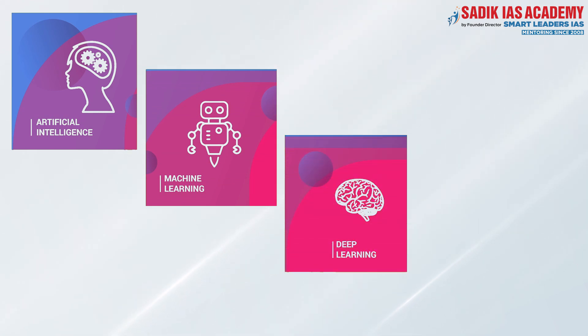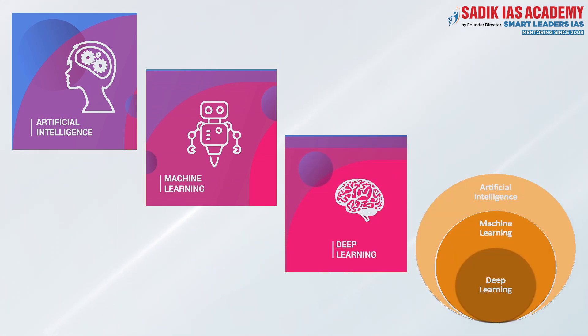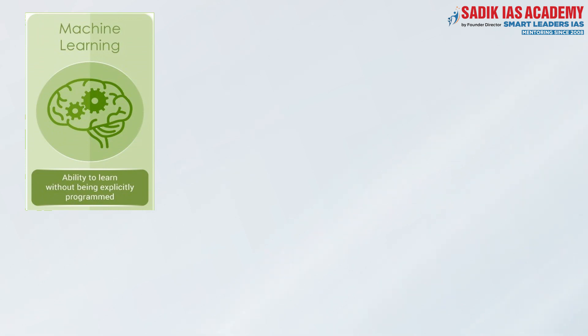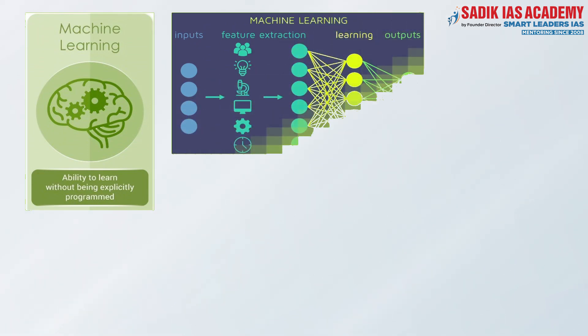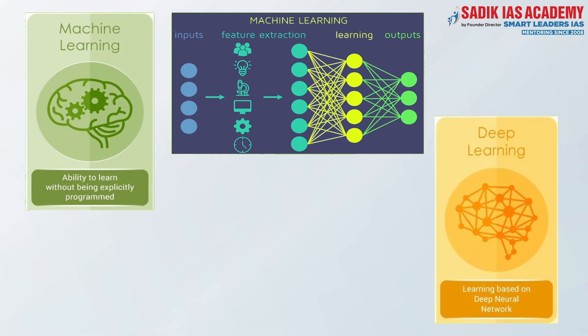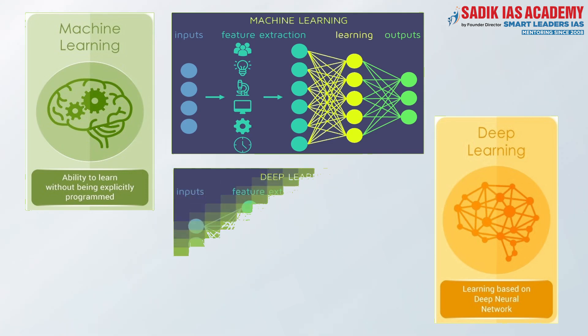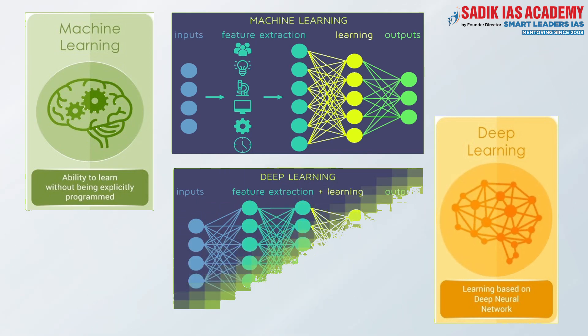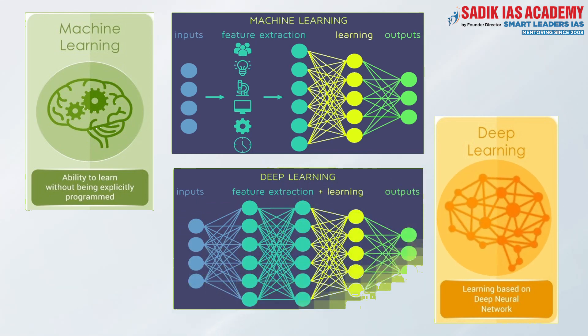The umbrella term artificial intelligence involves two components: machine learning and deep learning. Deep learning is a subset of machine learning, and machine learning is a subset of artificial intelligence. Machine learning uses a set of algorithms to analyze and interpret data, learn from it, and based on the learnings, make the best possible decisions. On the other hand, deep learning structures the algorithms into multiple layers in order to create an artificial neural network inspired by the functionality of the human brain called neurons. This neural network can learn from data and make intelligent decisions on its own.